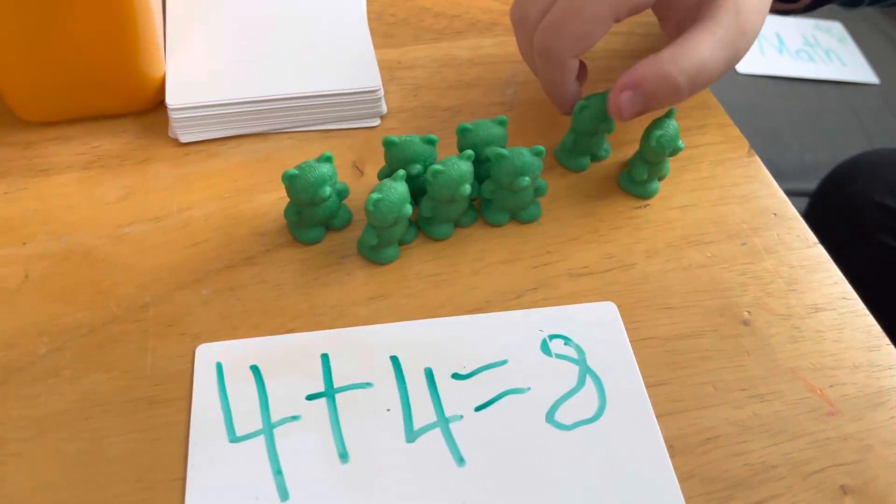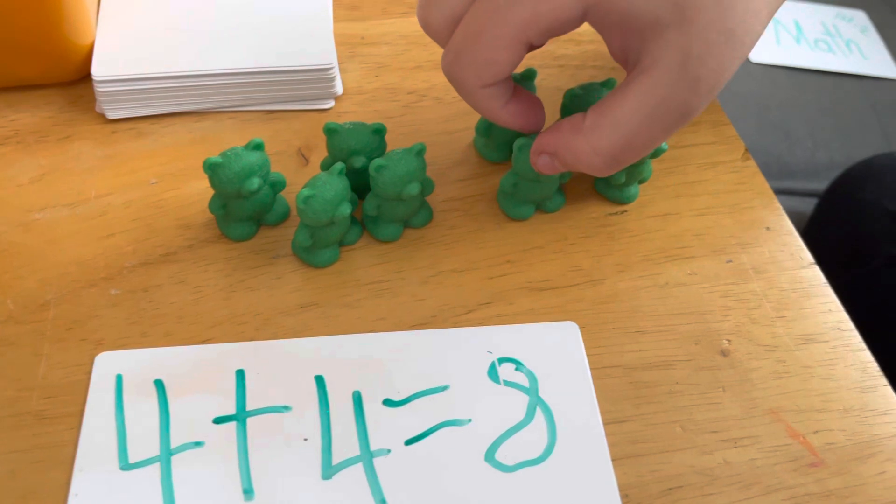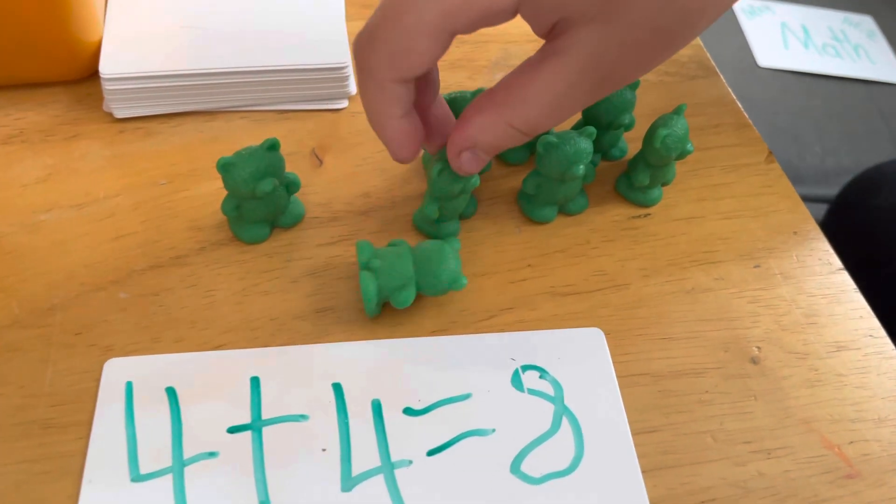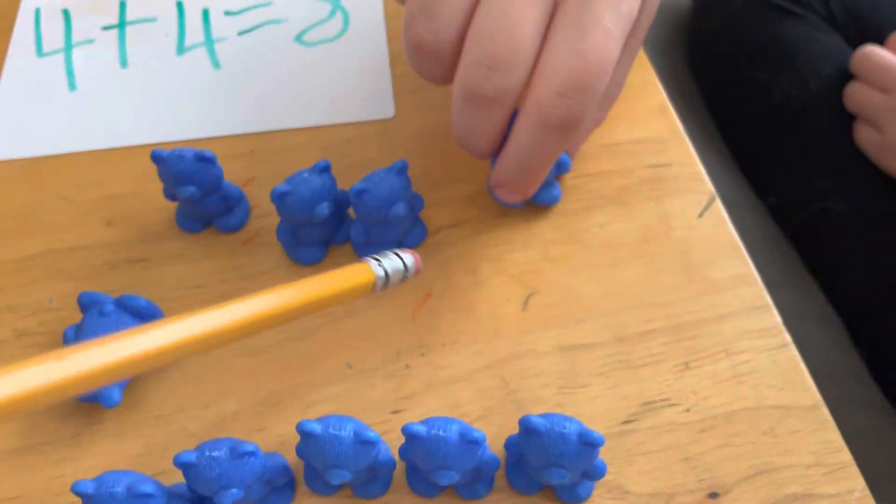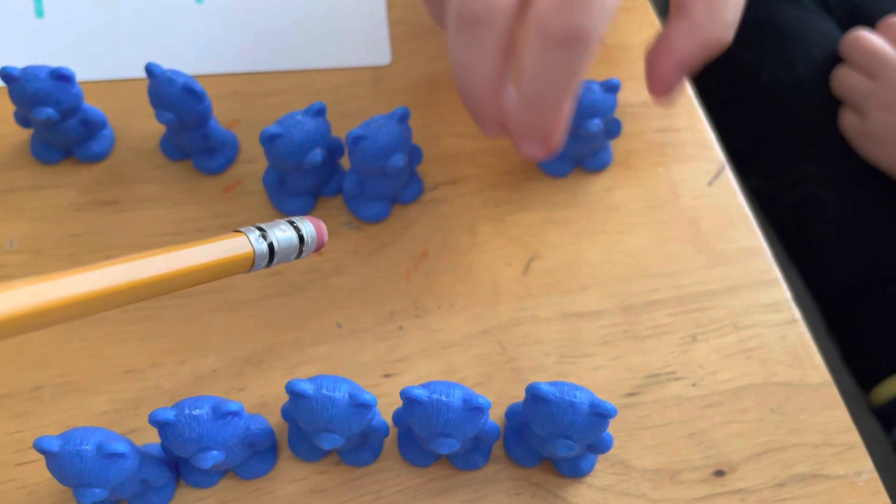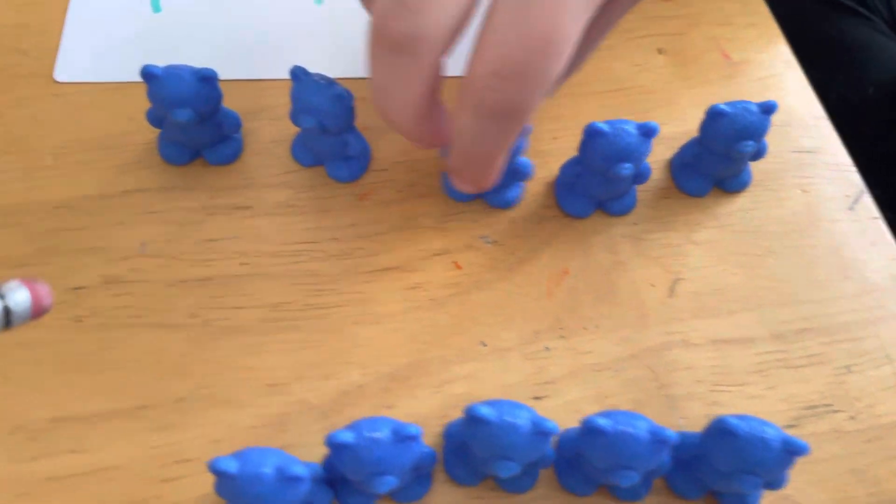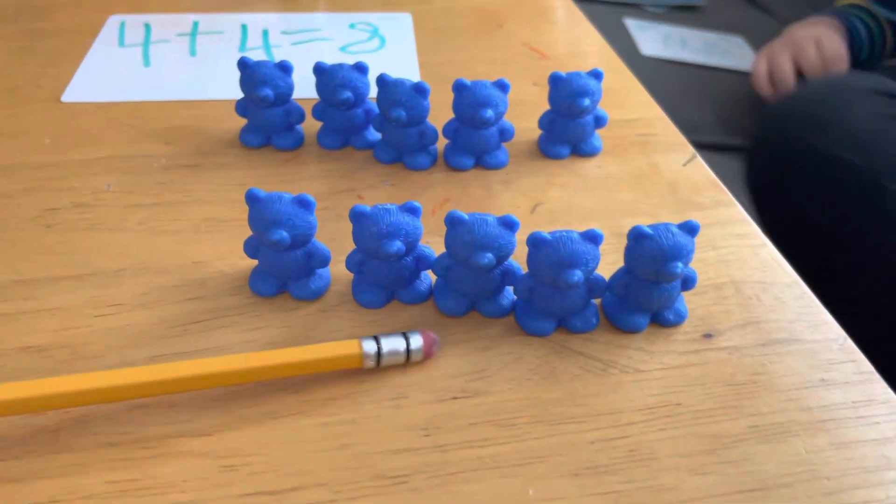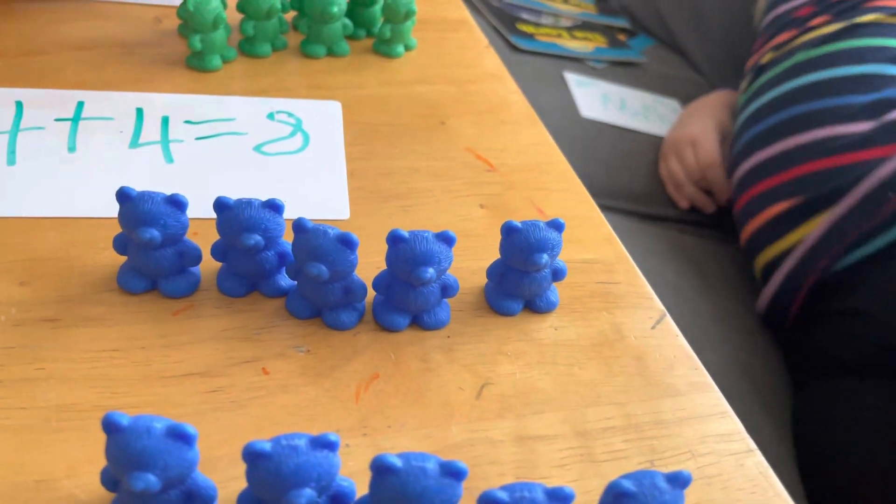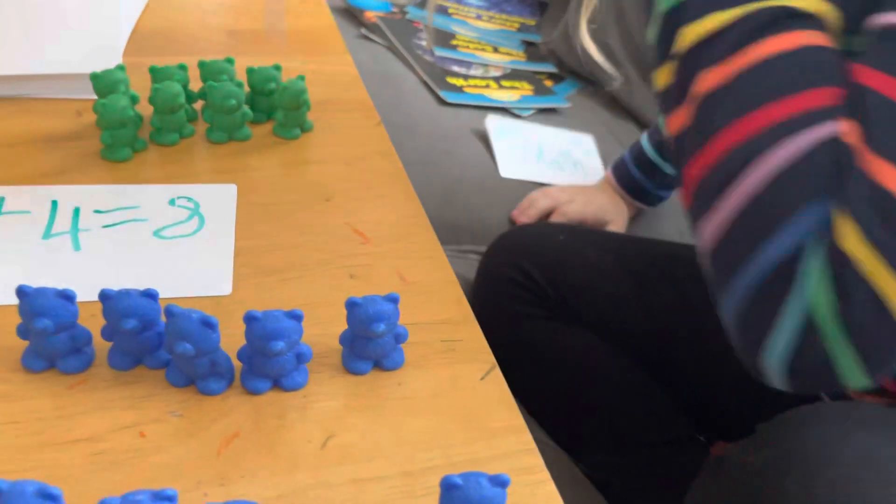Move them aside. Thirteen, fourteen, fifteen, sixteen, seventeen, eighteen, nineteen, twenty. Okay, let's keep going. Twenty-one, twenty-two, twenty-three, twenty-four, twenty-five, twenty-six, twenty-seven, twenty-eight, twenty-nine, thirty. Thirty bears.